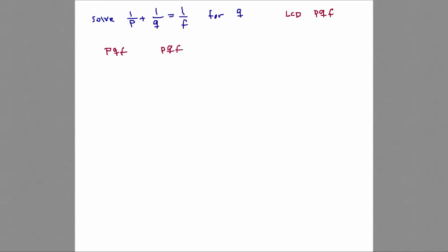Here I have 1 over P, we have 1 over Q, we have 1 over F. And by doing that, you see that P over P turns to 1, and then Q over Q turns to 1. F over F turns to 1.